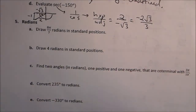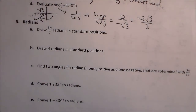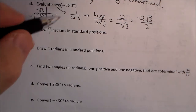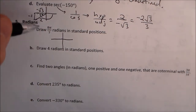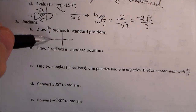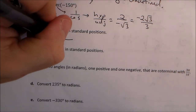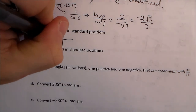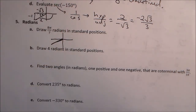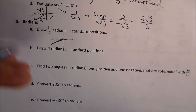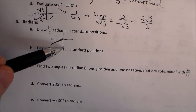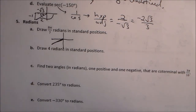Now we need to draw 8π over 7 radians in standard position. If it were 7π over 7, that would be at π. So this is 1 seventh past π, putting it just past the negative x-axis. We know it's in quadrant three, a little bit closer to the x-axis than the y-axis.